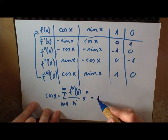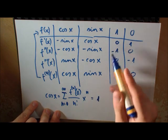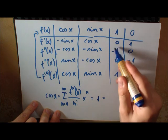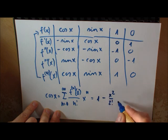Then x to the one disappears because this will be zero. Then we get minus one, and this is two, x squared, two factorial.